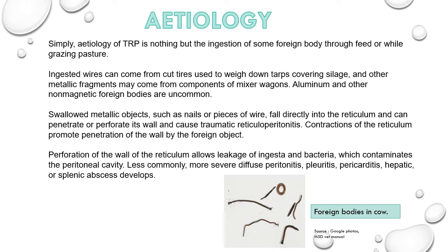Contractions of the reticulum promote penetration of the wall by the foreign object. Perforation of the wall of the reticulum allows leakage of ingesta and bacteria, which contaminates the peritoneal cavity. Less commonly, more severe diffuse peritonitis, pleuritis, pericarditis, and hepatic or splenic abscess may develop.